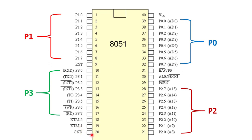Pin number 20 is the GND — ground pin. This is used for the ground connection to complete the circuit and supply a ground reference.